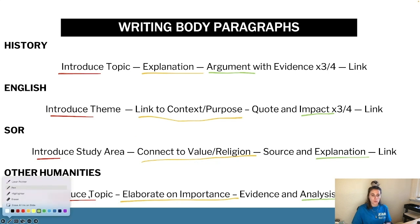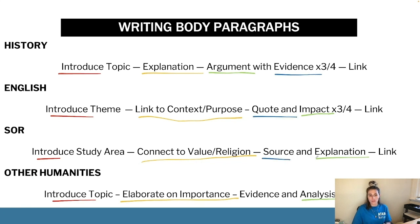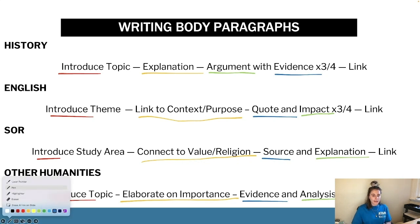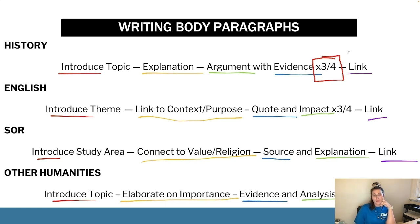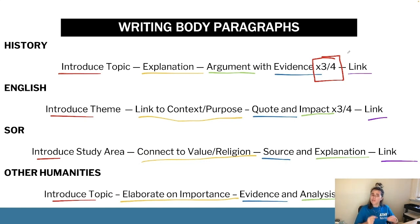Then we move on to our evidence — this is straightforward: a statistic, a quote with a technique, a Bible quote or theologian quote, a specific legal case. Then finally we have our link that ties it all back to what is our point. We want to be doing that three or four times per paragraph. Three is the minimum — that's the goal, ideally four. The best essays will have four. Obviously if it's a 15-mark essay you're not getting four in every paragraph, but for a regular 45-minute, 20-25 mark essay your goal is three paragraphs of four pieces of evidence.